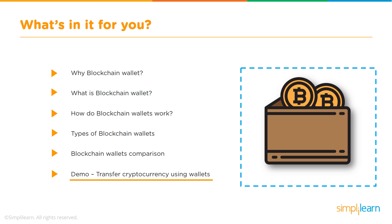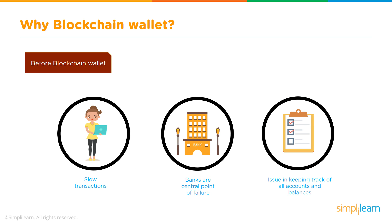Before blockchain wallets came into existence, we will look at what the means were for doing transactions and what were the drawbacks. In the old days, transactions were slow and banks were the central point of failure. Any transaction had to go through intermediary channels like banks, making them a single point of failure. There were also issues in keeping track of all accounts and balances, and data could get jeopardized, manipulated, or even corrupted across multiple systems.